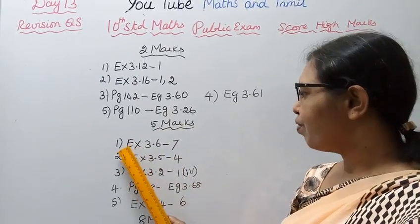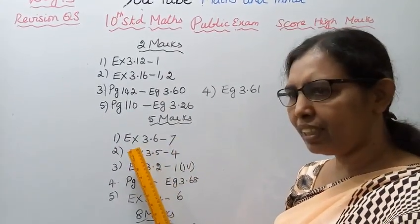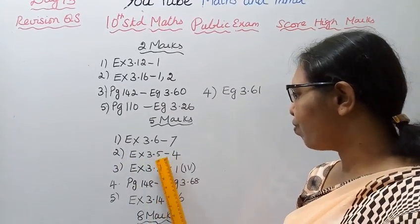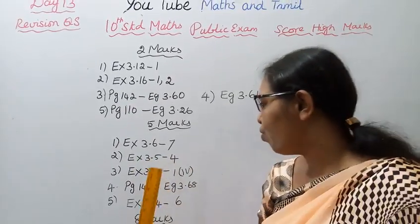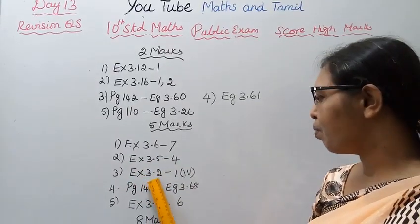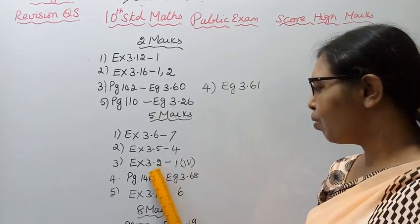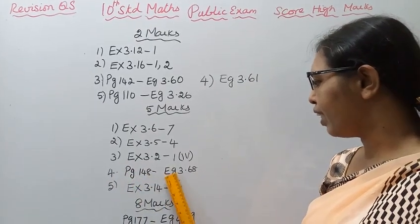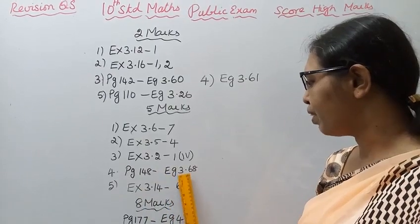For 5 marks: first, Exercise 3.6-7, two sums; second, Exercise 3.5-4; third, Exercise 3.2-1(iv); fourth, page 148, example 3.68.